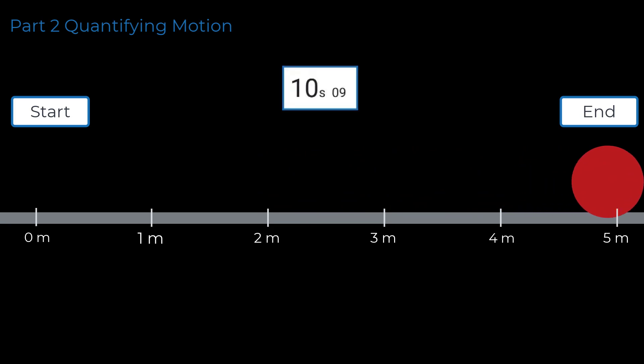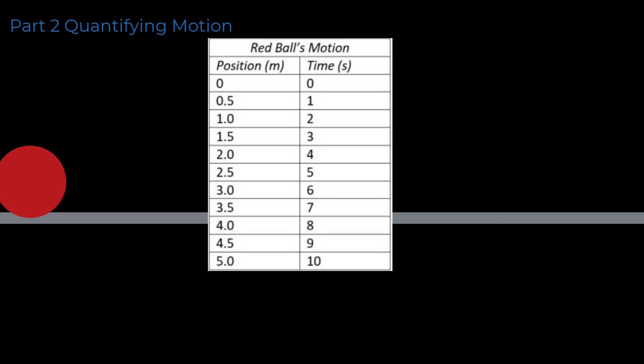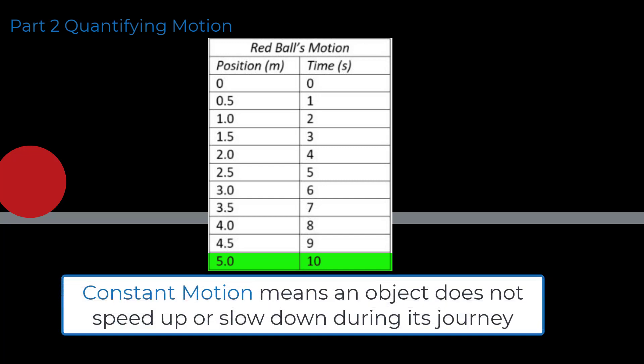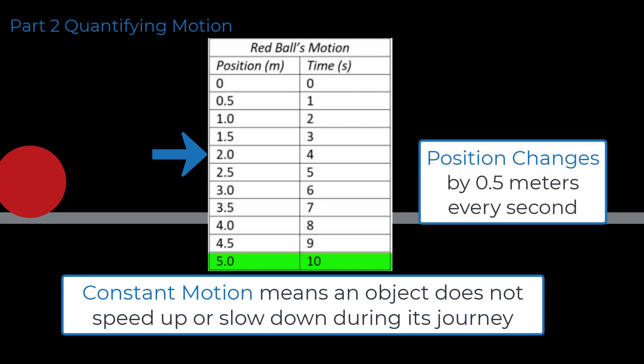Let's take a look at the data recorded from the movement of the red ball. From the data table we can observe that as the red ball moves across the flat surface, it takes 10 seconds to travel 5 meters. The ball does not speed up or slow down significantly — we can say its motion is constant because the position changes by 0.5 meters every second. This data confirms that the red ball was moving at a constant speed.